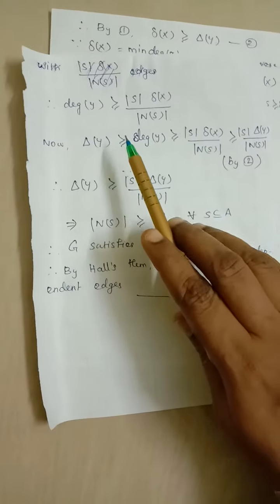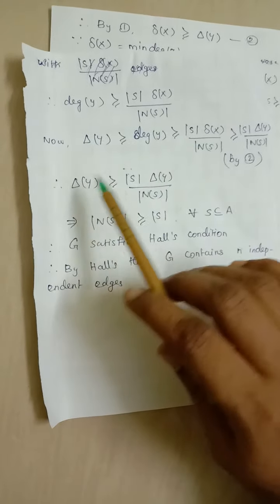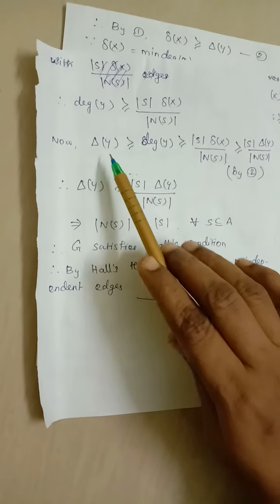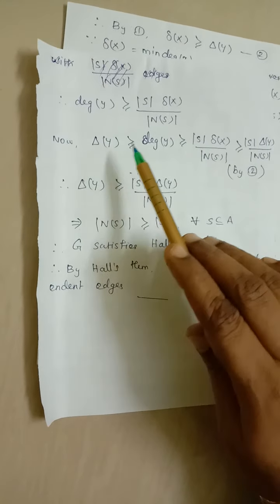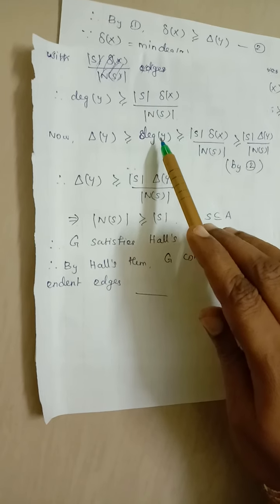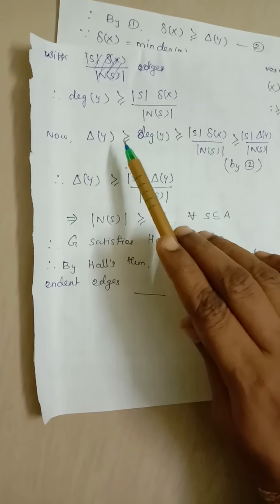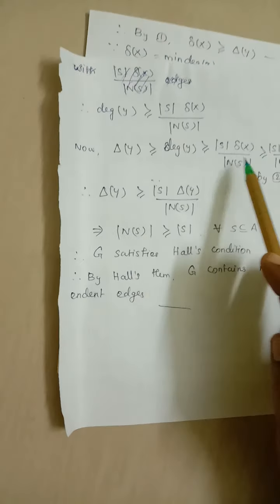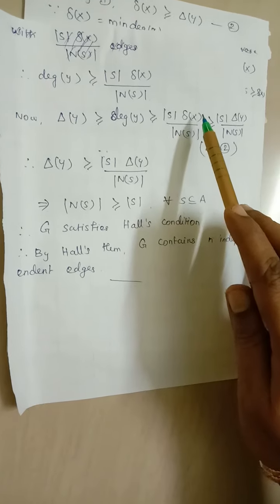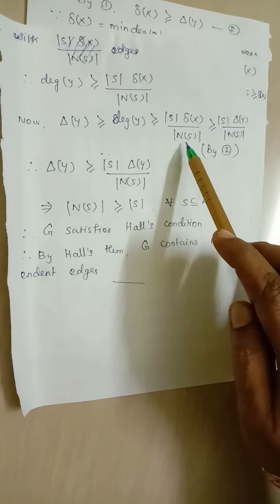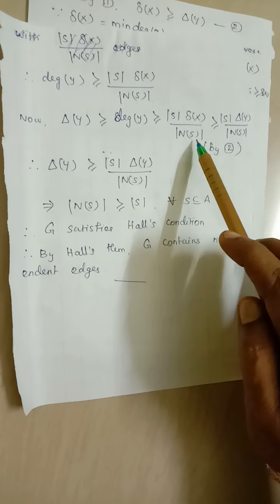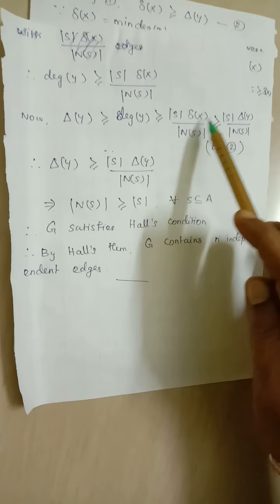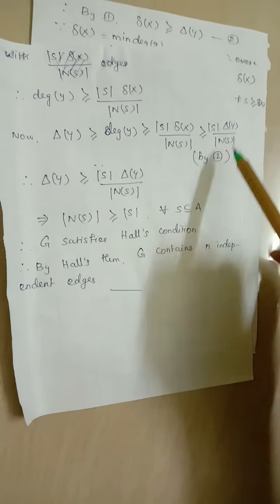So the degree of y is greater than or equal to |S| · δ(X) / |N(S)|. Now, comparing δ(Y) with the degree of y: since δ(Y) is the maximum degree of all vertices in B, clearly δ(Y) ≥ degree of y ≥ |S| · δ(X) / |N(S)| ≥ |S| · δ(Y) / |N(S)|, where the last step uses equation number 2.